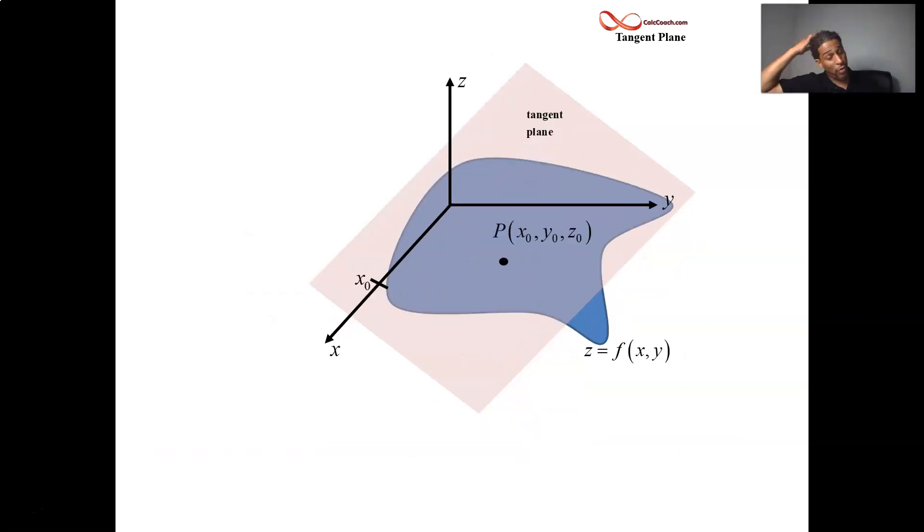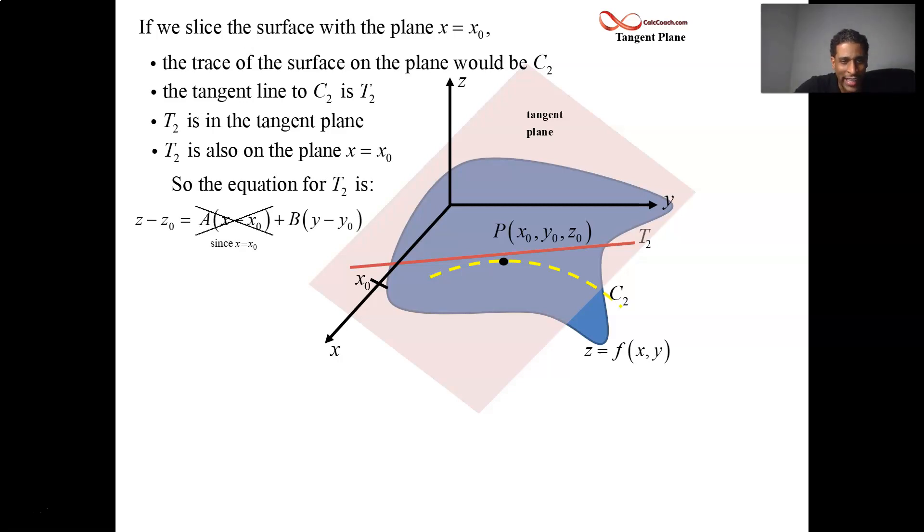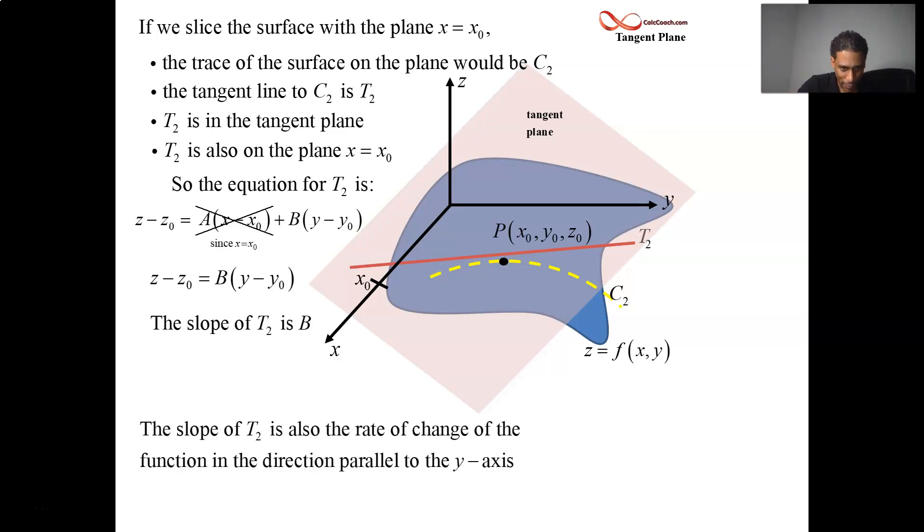Now, let's turn it and do it for slicing x = x₀. We get another curve, let's call it C₂, and then tangent to that, let's call that line T₂. T₂ is both in the tangent plane and also in the plane x = x₀. So when you go for that equation, the x - x₀ term is going to go away and you'll just have z - z₀ = B(y - y₀). The slope of that T₂ line is capital B. But also the slope of that T₂ line—you're stepping in the direction of the y-axis—so that's the partial with respect to y at that point.